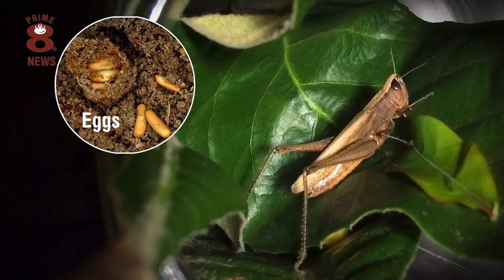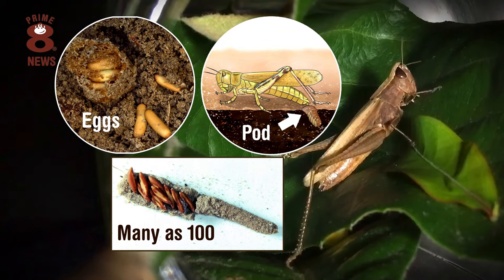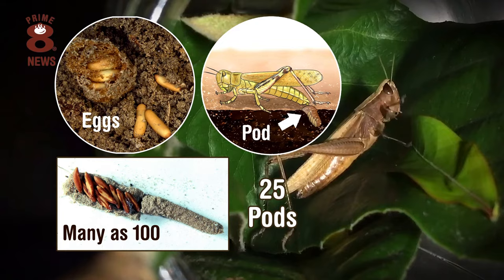Like most insects, grasshoppers start as eggs, having been laid by the female inside something called a pod. One of these pods will contain anything from just a few eggs to as many as 100, depending on the variety of grasshopper. Amazingly, some grasshoppers can lay as many as 25 pods.